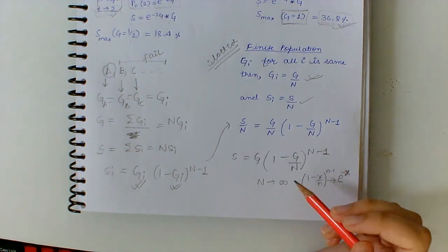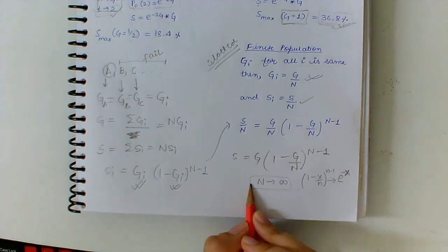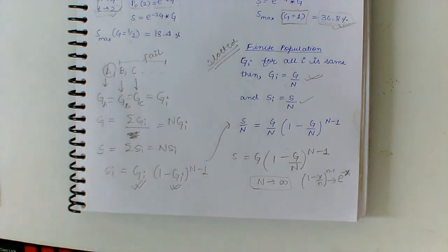This is the formula whenever n tends to infinity, so infinite population. If we convert it into infinite population, we get the same result as we have seen before.